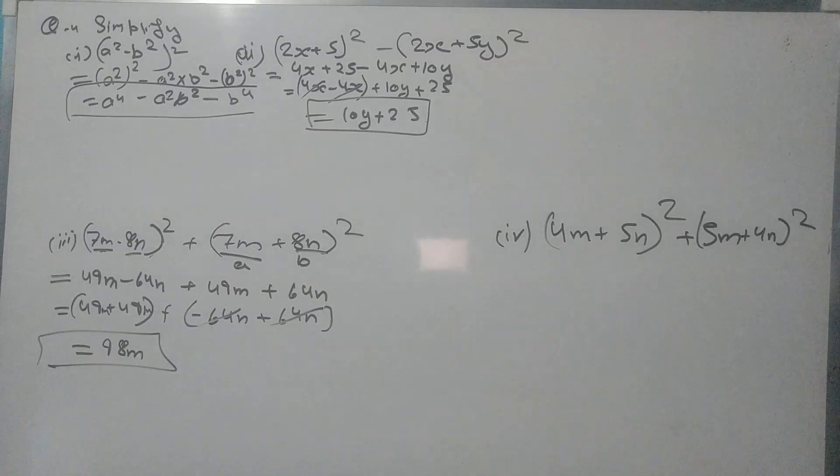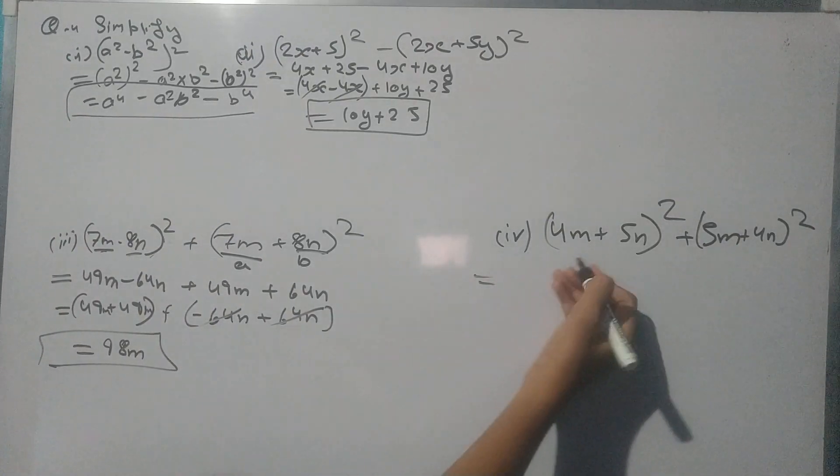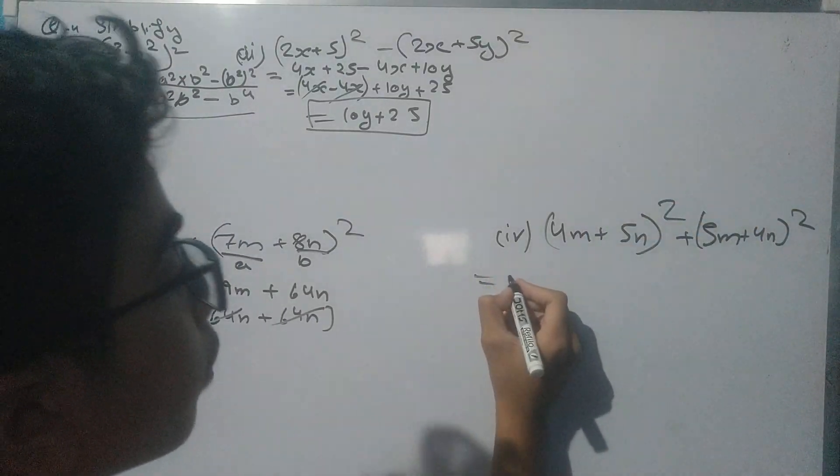So this is the answer. Now going to the fourth part. In this part we have got (4m + 5n)² + (5m + 4n)². So let's solve it.